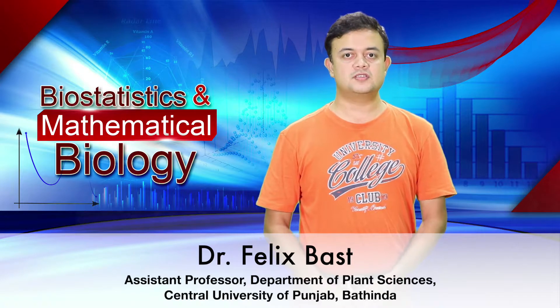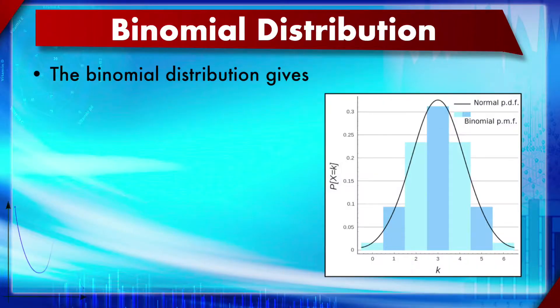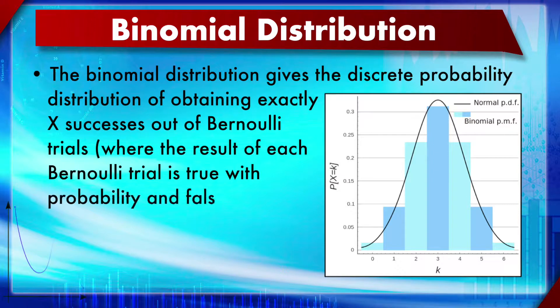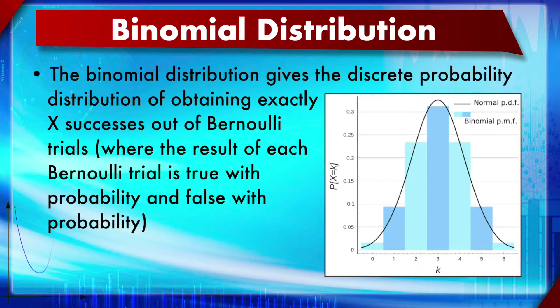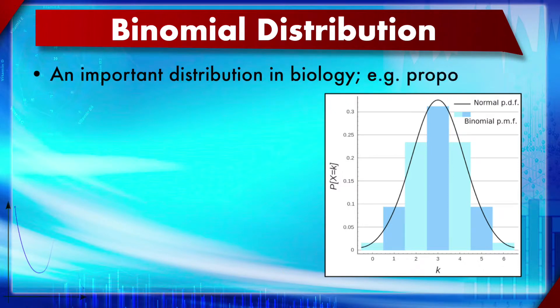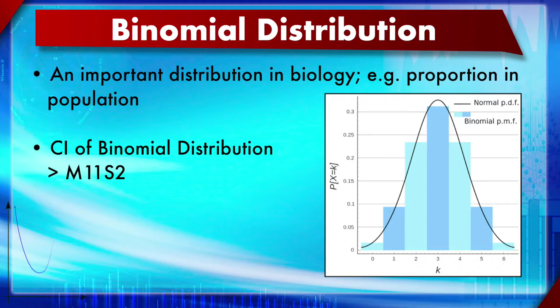Module 21: Gaussian, log-normal, binomial and Poisson distributions. Section 2: discrete probability distributions - binomial and Poisson distributions. The binomial distribution gives the discrete probabilities of obtaining exactly x successes out of Bernoulli trials, where the result of each trial is true with some probability and false with the complementary probability. This applies only when there are two possible outcomes, such as true or false. The binomial distribution is very useful for proportions in biology.